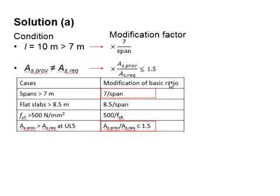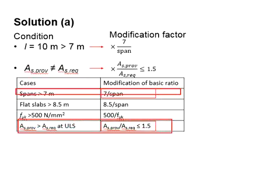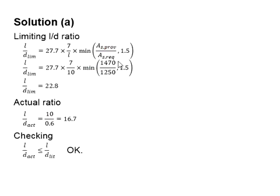Next, we look into the modification factors. The span is 10 meters, which is more than 7 meters, and the provided As is not the same as As required. Therefore, because of these two, there will be modification factors applied. The calculated l/d ratio is to be modified with a factor for these two considerations. Therefore, it is multiplied with 7 divided by 10 and the minimum of 1470 divided by 1250 and 1.5. You will get the l/d limit is 22.8.